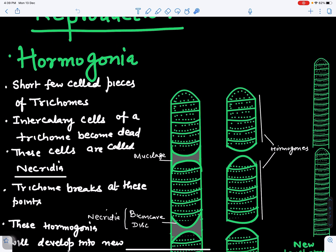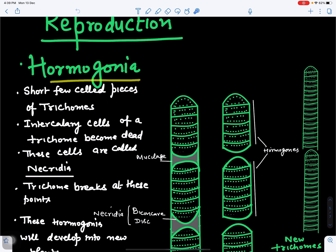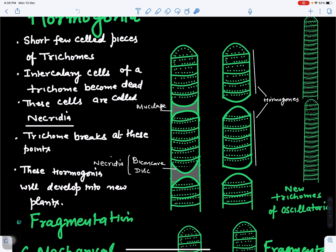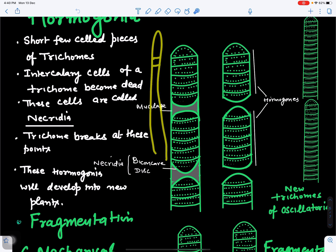Reproduction in Oscillatoria occurs by formation of hormogonia. Some cells in the filament get filled with mucilage and are called necridia, also known as biconcave discs. When a cell dies, its lower and upper walls bulge outward because the cell is losing its turgidity.